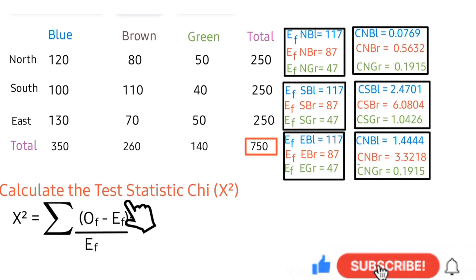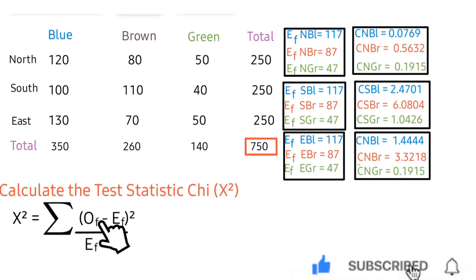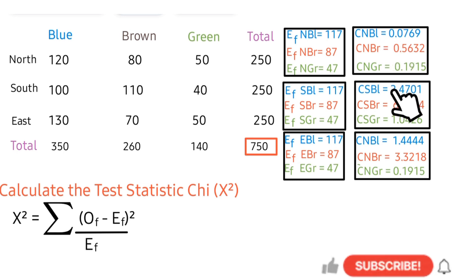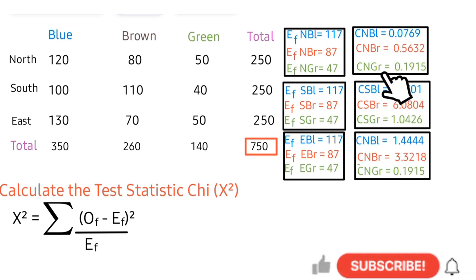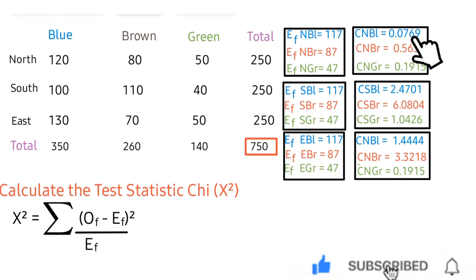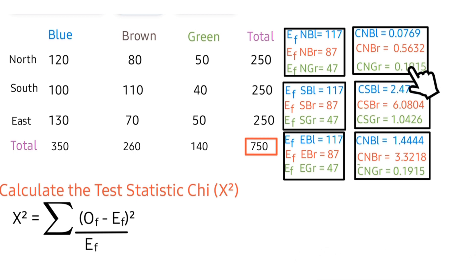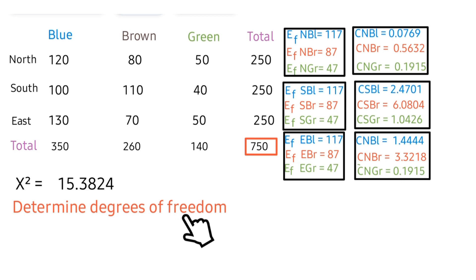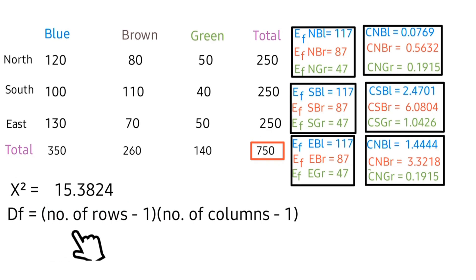Next is to calculate our test statistic using the summation formula — this symbol means addition or summation. We sum up all the contribution-to-chi values for all nine cells: 0.0769 plus the remaining values, giving us a test statistic of 15.3825.